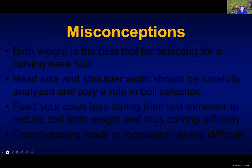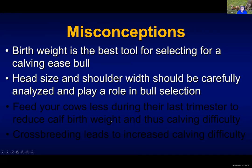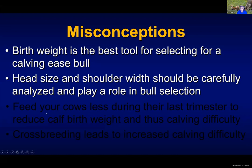A few misconceptions I want to go through. First: birth weight is the best tool for selecting a calving ease bull — that is a misconception; it is not true. Second: head size and shoulder width should be carefully analyzed and play a role in the bull's selection — another misconception. There's been a lot of research done on this very thing, and no one has shown any correlation whatsoever between head size and shoulder width and calving difficulty or ease. A lot of people do it, but it's a waste of your effort and actually makes using calving ease direct alone less effective.